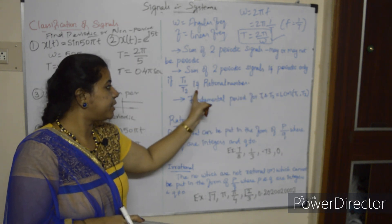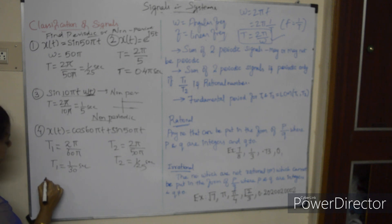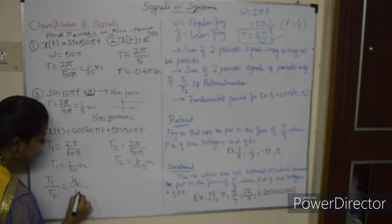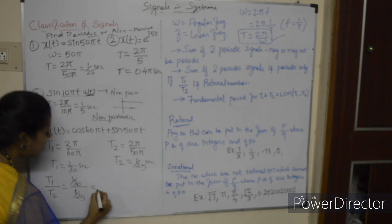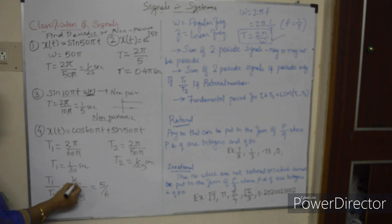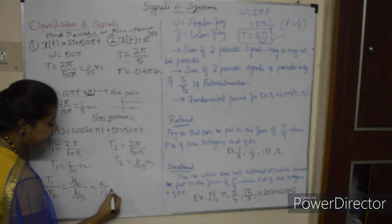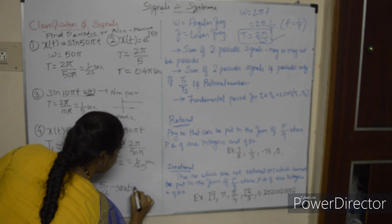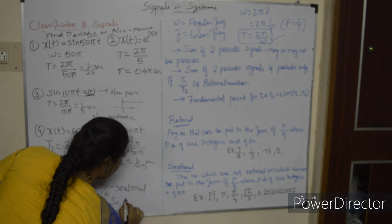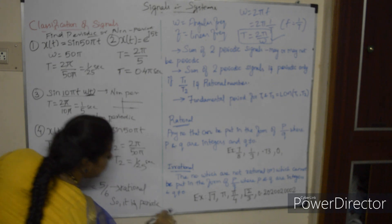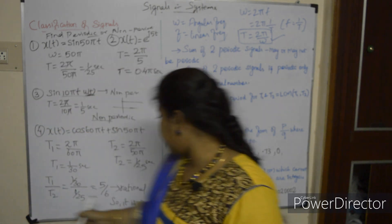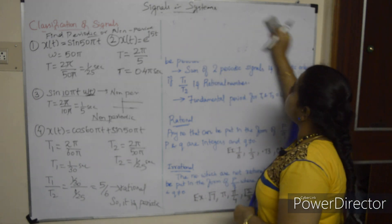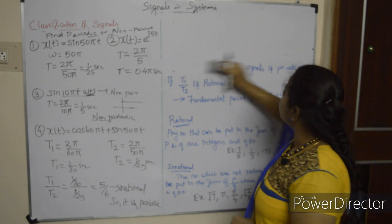T1/T2 = 5/6, which is a rational number. Therefore the signal is periodic. Since it is periodic, we need to find the fundamental time period.